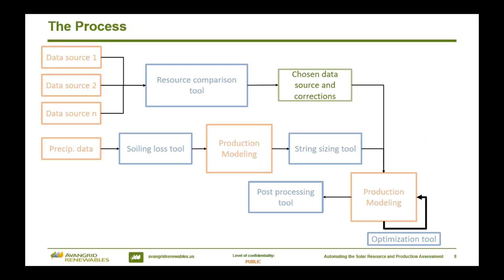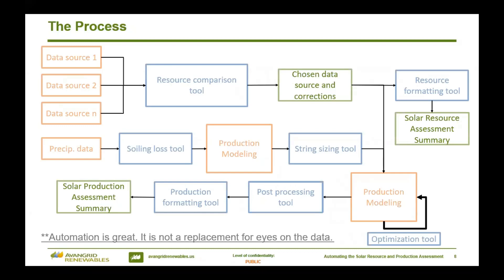Now this is the most important part: automation is wonderful, but it is not a replacement for your eyes on the data — I think Adam Jensen mentioned something similar in his presentation. For this purpose, whenever I'm creating these tools, there is always formatted output. It includes tables, figures, and all my intermediate steps as well as my final answers. This information is great because I can really easily open that document and say: data source 2 has a time shift in it, I need to fix that, or these production modeling numbers don't make any sense, I need to make sure my inputs to my API are set correctly. Data visualization is super helpful in identifying any issues that may come up.